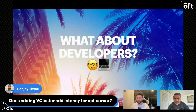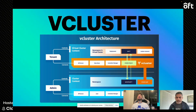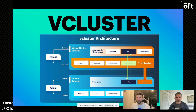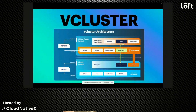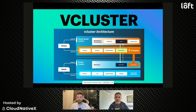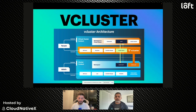A question came up: does adding vCluster add latency for the API server? The good thing about vCluster is that it creates a new API server — so tenants talk directly to their vCluster API server without going through the host cluster API server. For the host cluster, none of your tenants will hit that API server; they go straight to their vCluster API server. All those vCluster API servers are isolated, so tenants are not sending load to other tenants' API servers — everything is isolated.